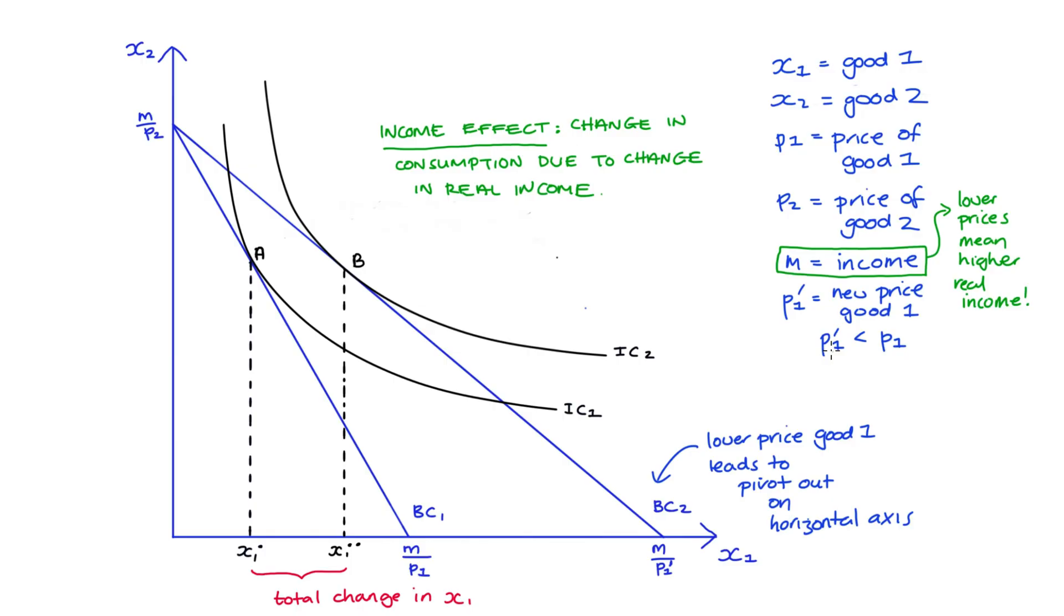The other thing that has changed here is that good one has become cheaper relative to good two. Now typically we tend to substitute away from more expensive goods towards cheaper ones. So if apples become cheaper than oranges we tend to buy less oranges and more apples. In our case the decrease in the price of good one might mean that we buy less of good two and more of good one. We're substituting away from the more expensive good. Any change in consumption that is due to changes in the relative prices of the goods, well we're going to call that the substitution effect.